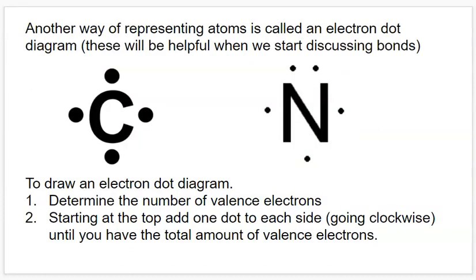Another way of representing atoms is something called an electron dot diagram. These are going to be really useful when we start discussing bonds, because the valence electrons control the types of bonds that can be made. And with these, we don't need to show all of the shells — we're only showing the outer shells.